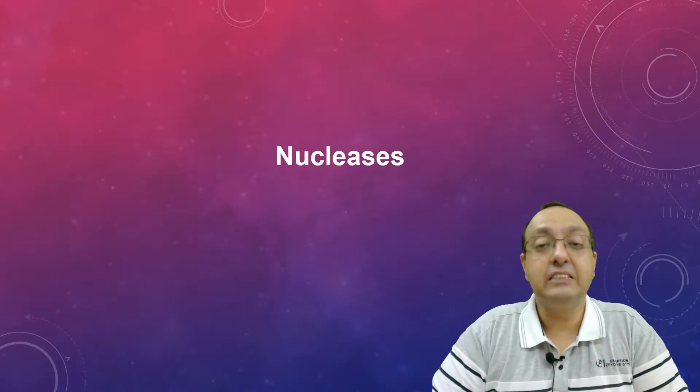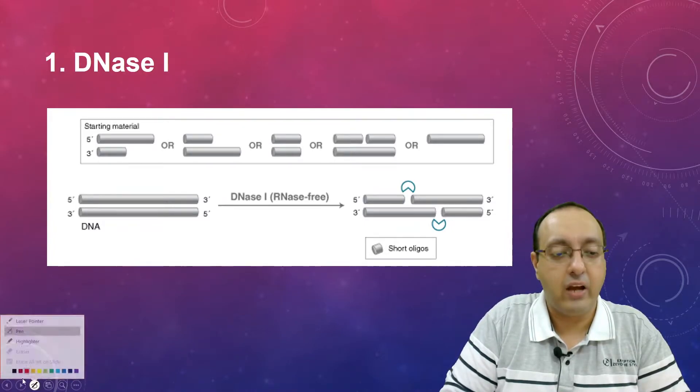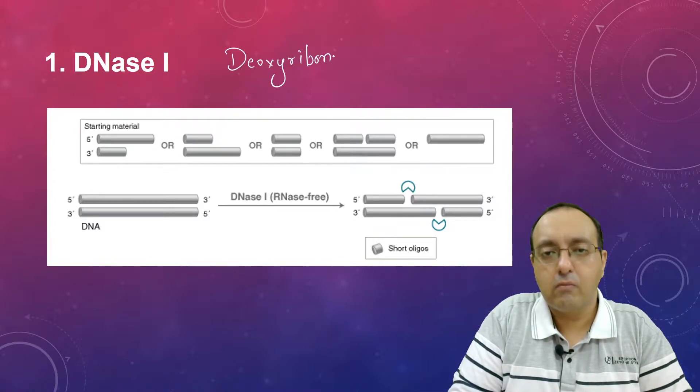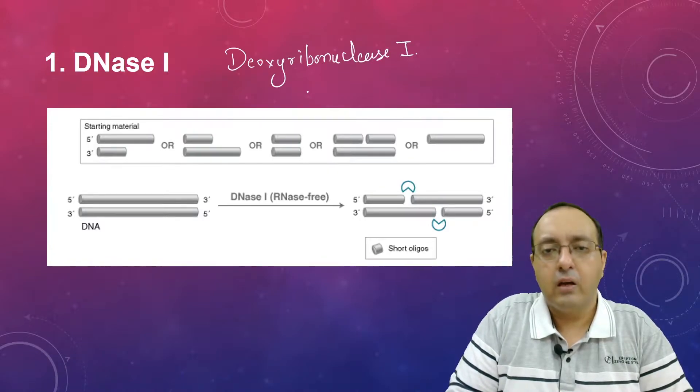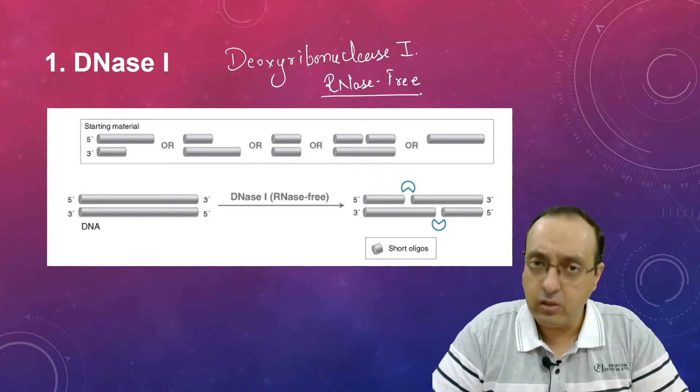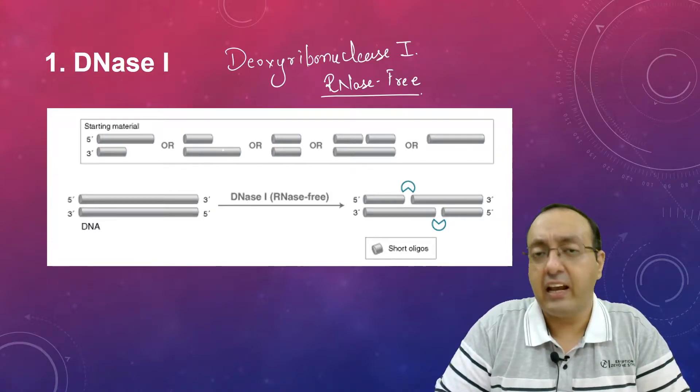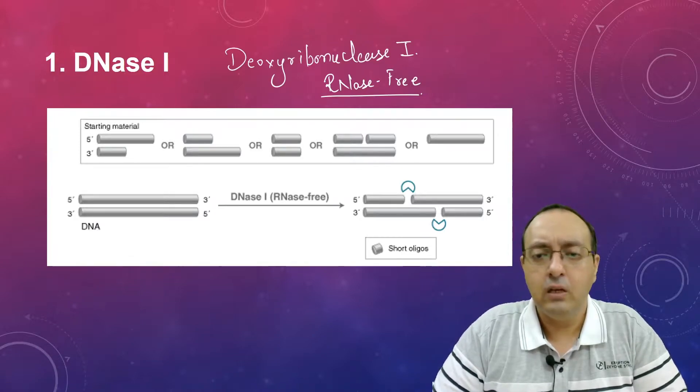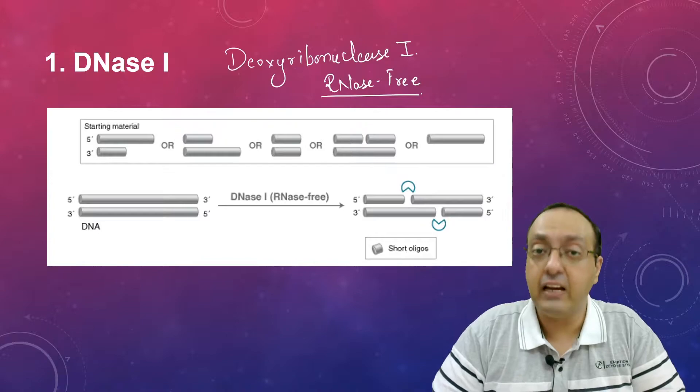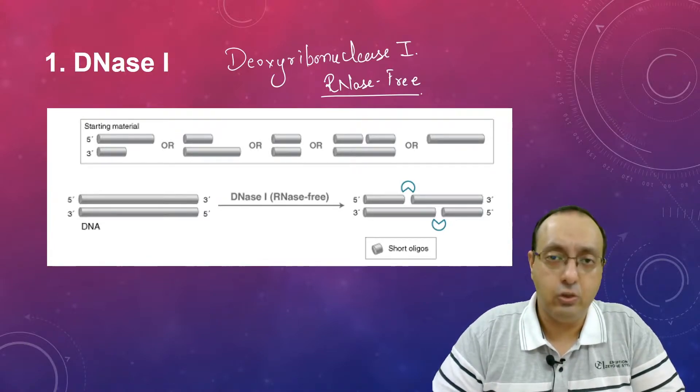The first category is nucleases. The first nuclease is DNase I, which stands for deoxyribonuclease-1. It is a pretty non-specific enzyme. It is usually provided as RNase-free preparation by reagent manufacturers, and double-stranded DNA or any DNA which has overhangs can act as the template for this enzyme. One use is to generate genomic DNA-free RNA preps. When we are isolating RNA and want to get rid of genomic DNA or template DNA, we can use DNase I.